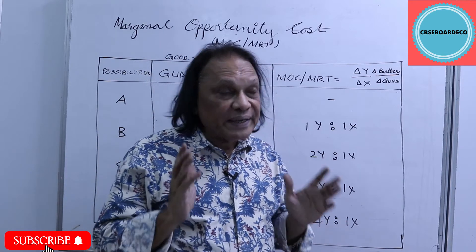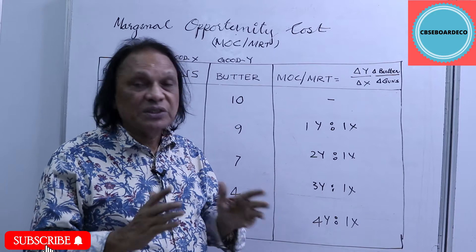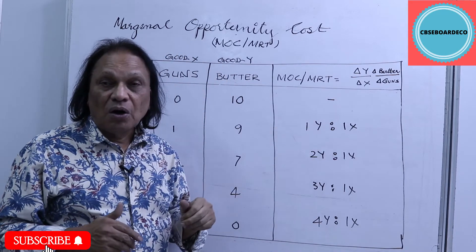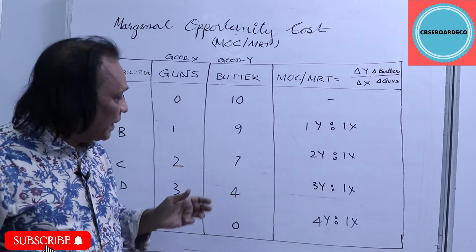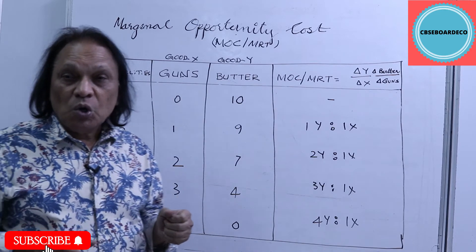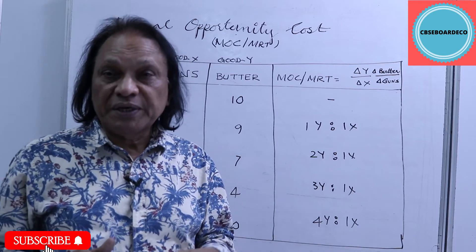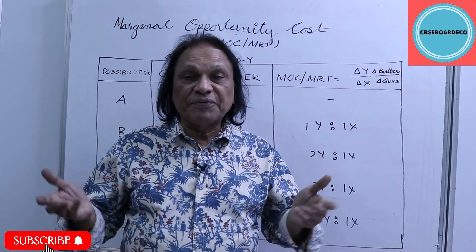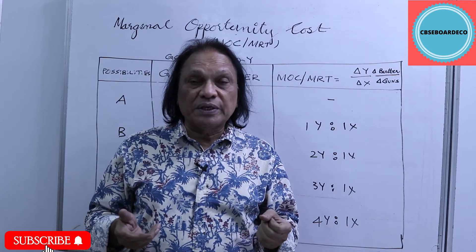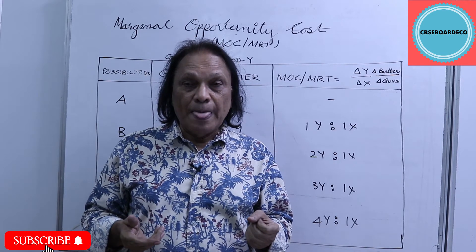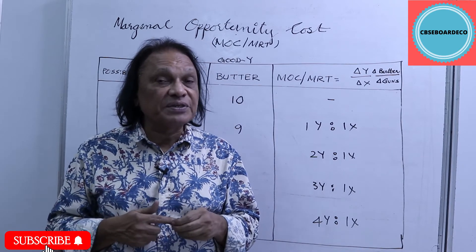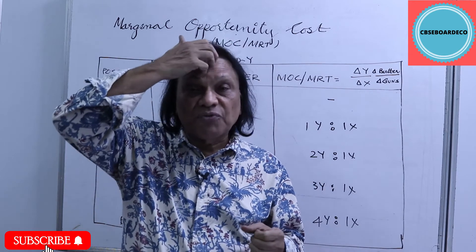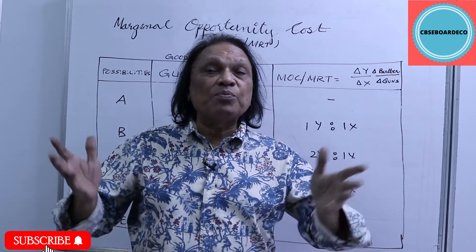Today we learn a new concept: Marginal Opportunity Cost (MOC), also called Marginal Rate of Transformation (MRT). What is the difference between opportunity cost and MRT? Marginal Opportunity Cost is defined as the rate of sacrifice of one commodity in order to produce one more unit of the other commodity.